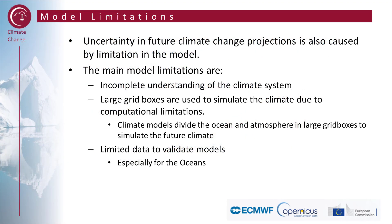Another source of uncertainty is caused by limitations in the models. The main model limitations are incomplete understanding of the climate system, the large grid boxes used to simulate the climate due to computational limitations, and the limited data available to validate the models.